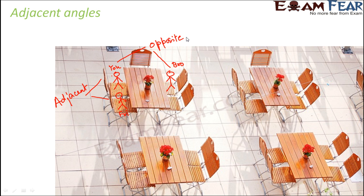So here we are going to talk about adjacent angles. The word adjacent means next to something — whether it is you and your friend sitting next to each other, or it is about some angles which are sitting next to each other. So two angles just beside each other are termed as adjacent angles. What we mean by angles beside each other is what we will understand in the next slide.